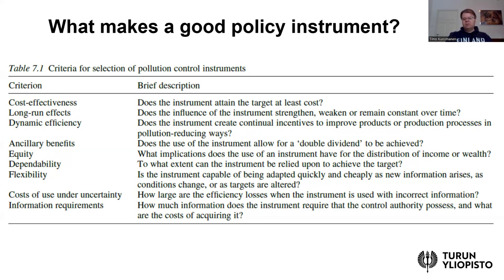This relates to information requirements and cost of use under uncertainty. The information requirements for a tradable emission permit system are much less because the government can control the amount of permits available and does not need to know the exact marginal cost curves of the firms. Flexibility is also important — how quickly and cheaply the instrument can be adapted if new information arises, conditions change, or targets are altered. These are all relevant concerns when choosing between different types of policy instruments.